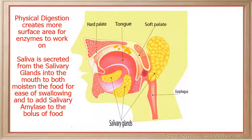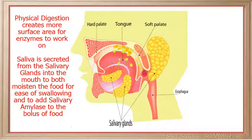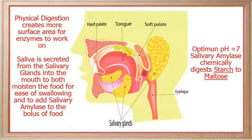Saliva is secreted from the salivary glands into the mouth and combines with starch to both moisten the food for ease of swallowing and to add the digestive enzyme salivary amylase to the bolus of food. Salivary amylase functions best at a pH of 7 and chemically digests starch to maltose.